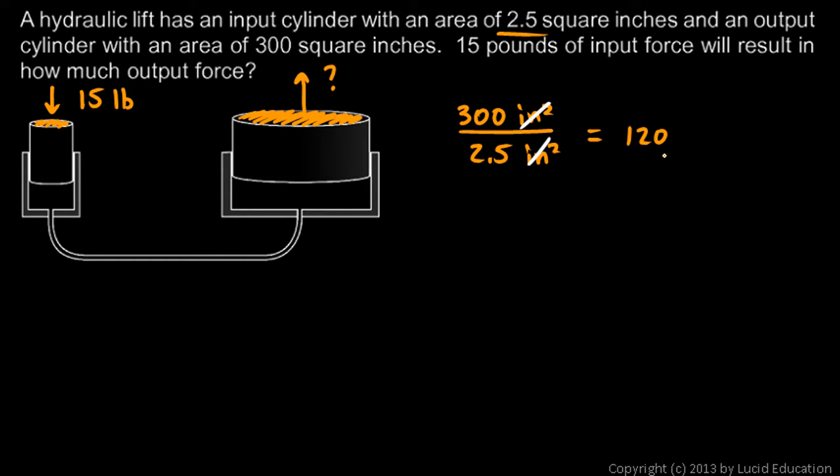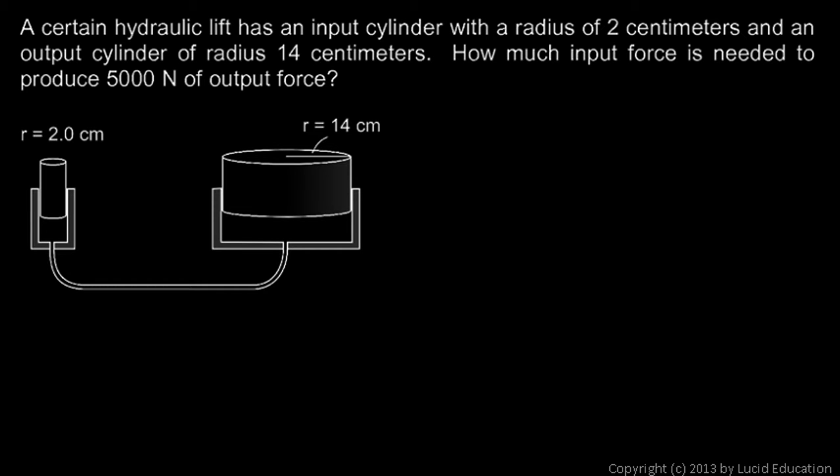So in this case, the 15 pounds input force gets multiplied by 120, and that gives us the output. 15 times 120 is 1800, so 1800 pounds. That's the answer. 15 pounds pushing down here will result in 1800 pounds of lift, nearly one ton of lift.